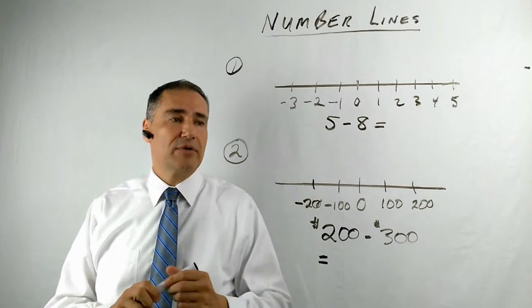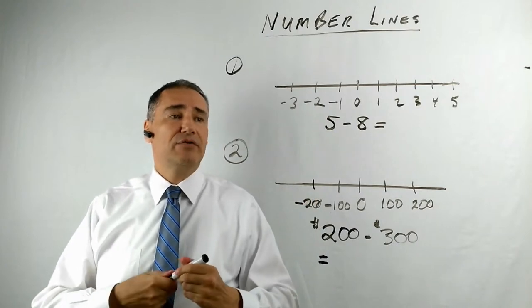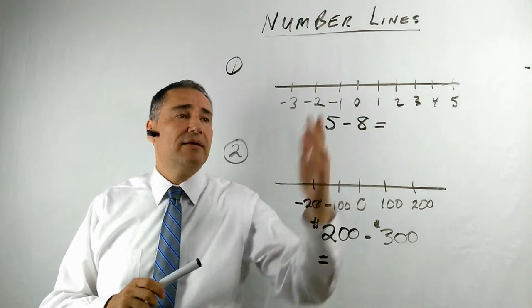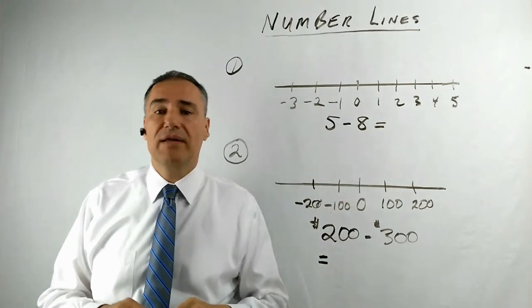One is you're working in a restaurant, another one may be in a retail store. So the first one is five minus eight on the number line. But let's look at it when you have a career or business.